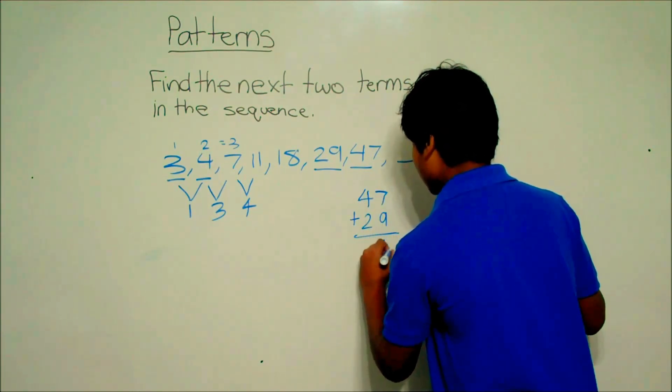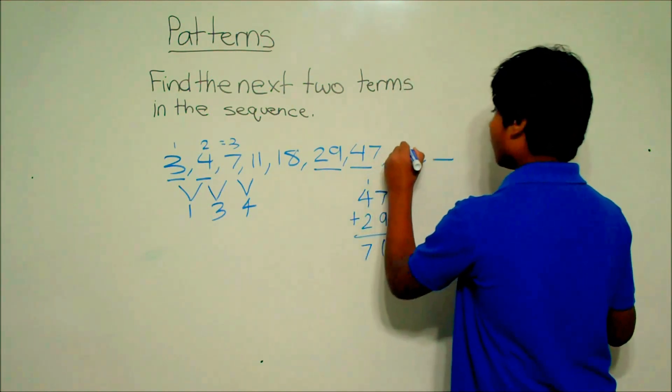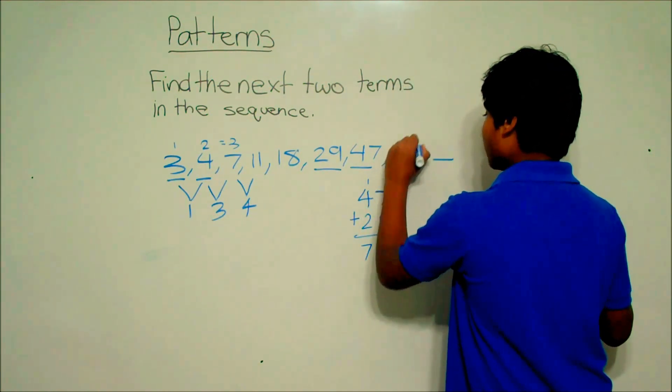7 plus 9 is 16, and we carry the 1. That gives us 76. So our next term is 76.